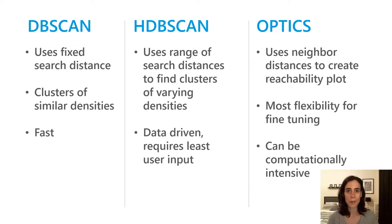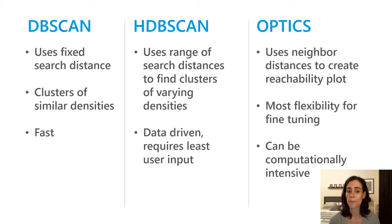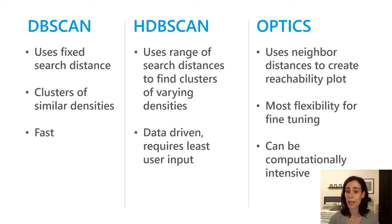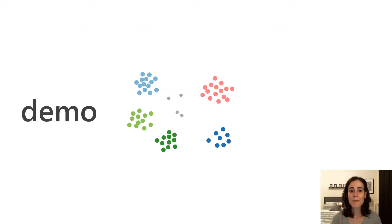To recap the three methods: DBSCAN uses a fixed search distance, finds clusters of similar densities, and is the fastest of the three. HDBSCAN uses a range of search distances to find clusters of varying densities — it's data driven and requires the least user input. OPTICS uses neighbor distances to create a reachability plot, has the most flexibility for fine-tuning, but can be the most computationally intensive.